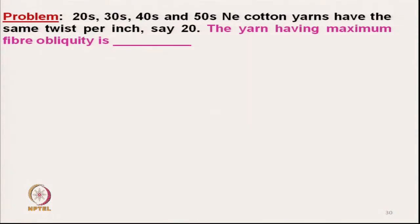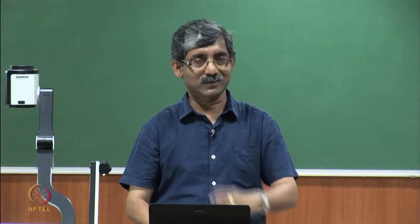This is a very simple problem. We have four different yarns of different count: 20s, 30s, 40s, and 50s. All are cotton yarns and have the same twist — 20 twists per inch. The question is: which yarn will have maximum fibre obliquity?